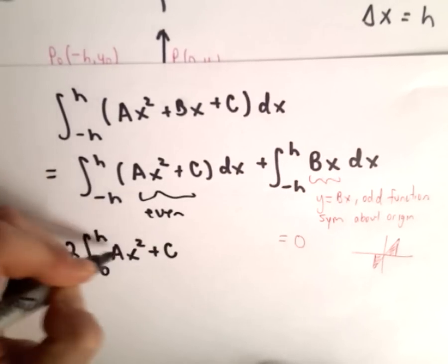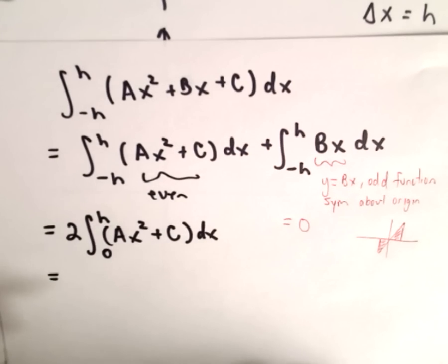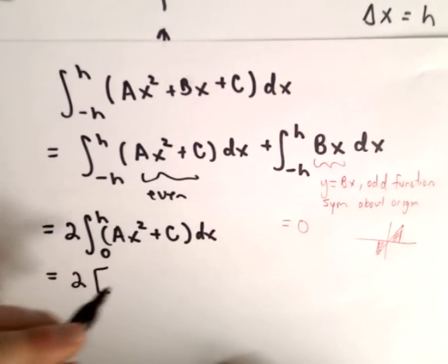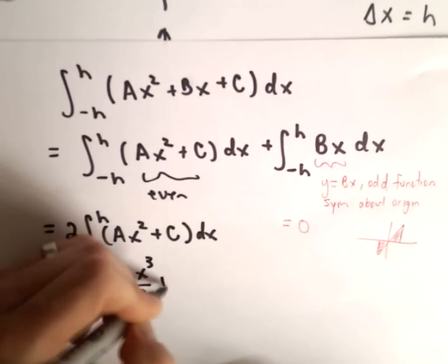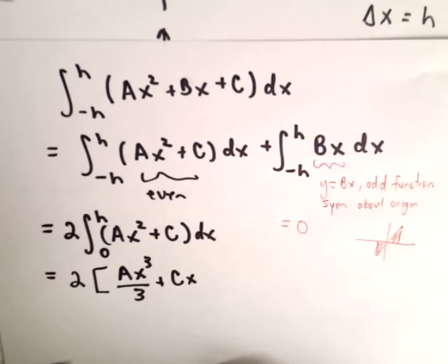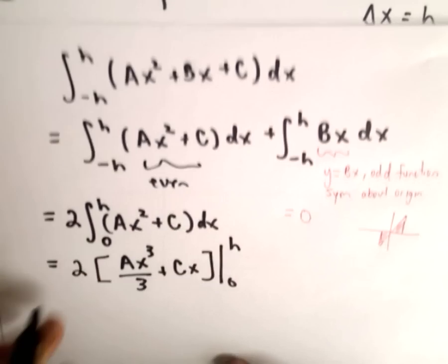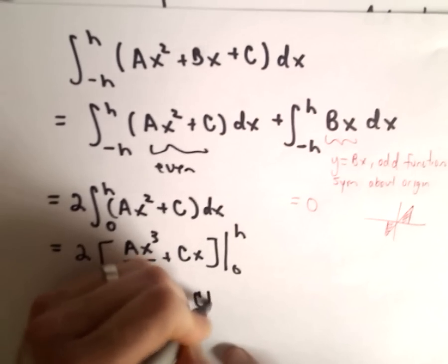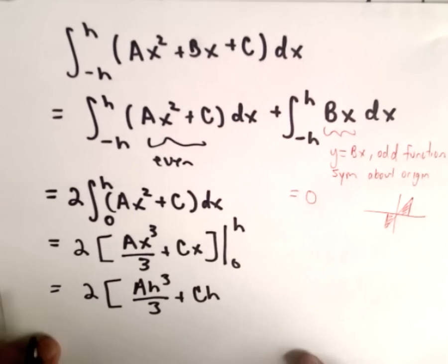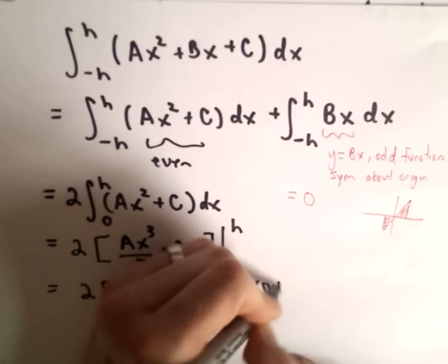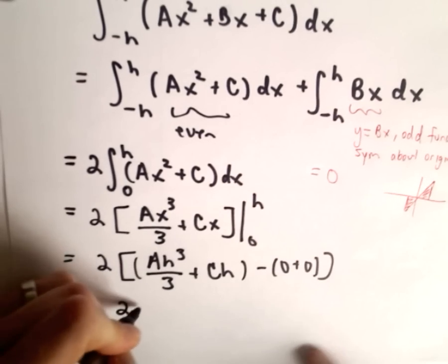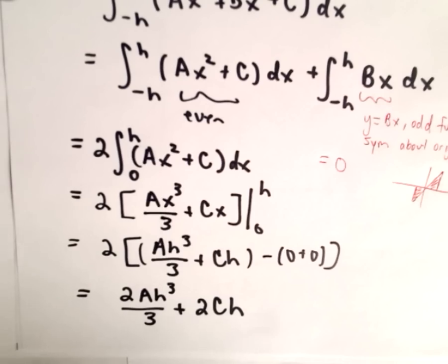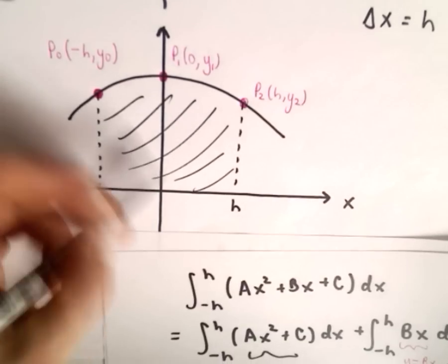So we have 2∫₀ʰ (ax² + c)dx. Computing the antiderivative gives us 2[ax³/3 + cx] from 0 to h. When we substitute in x = h, we get 2(ah³/3 + ch). When we substitute x = 0 we get zero. So we're left with 2ah³/3 + 2ch. That's the area underneath the parabola.